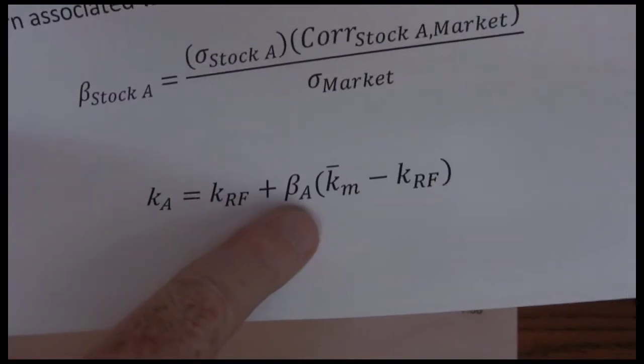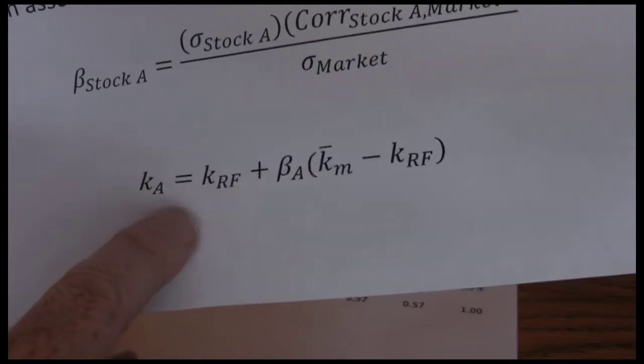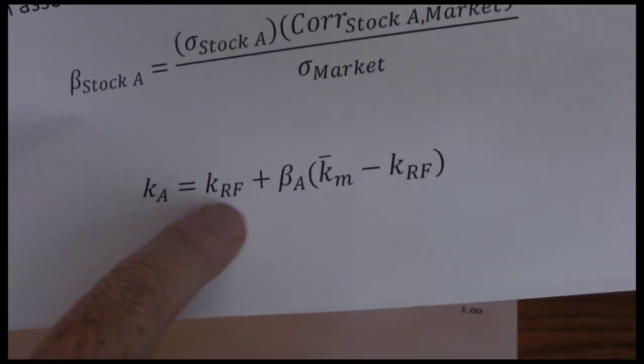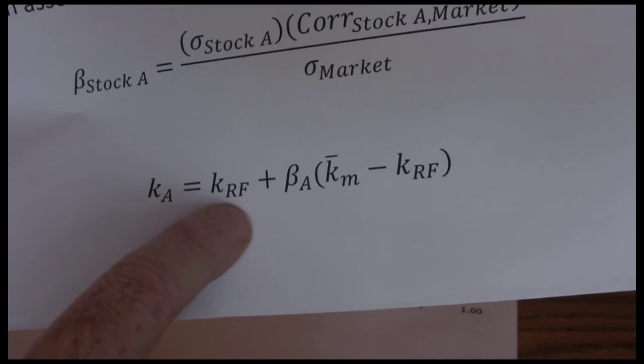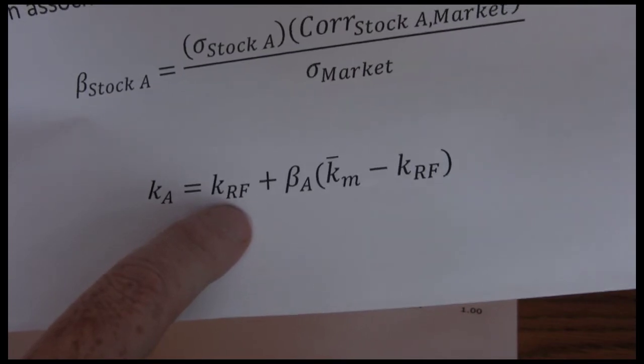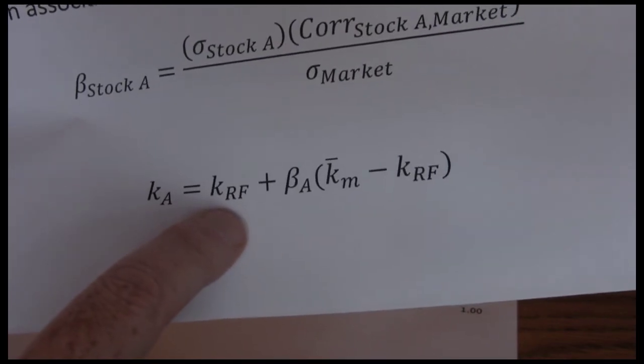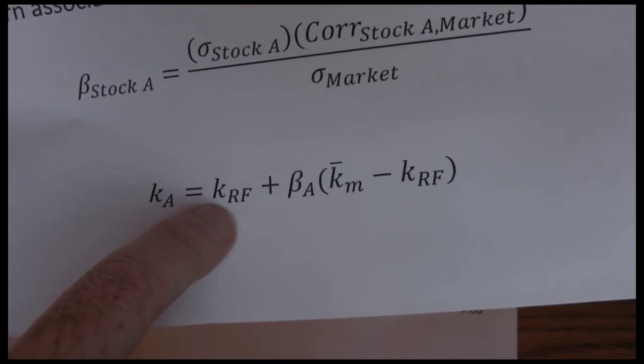And then once we have beta we can use it in the security market line. We have the risk free rate, often times we use the 10 year treasury note or treasury bond to approximate the risk free rate because that is an investment with about as low of a risk level as we can find.